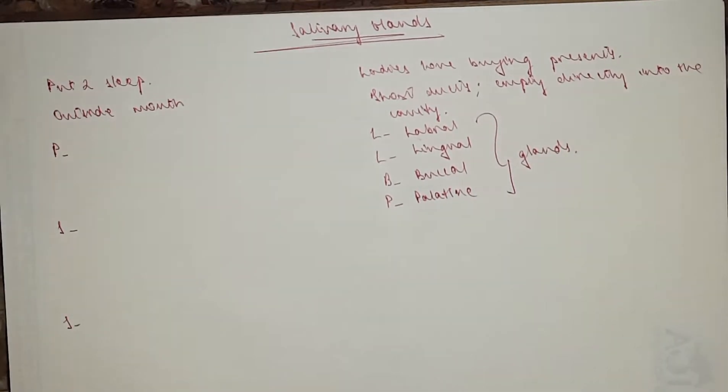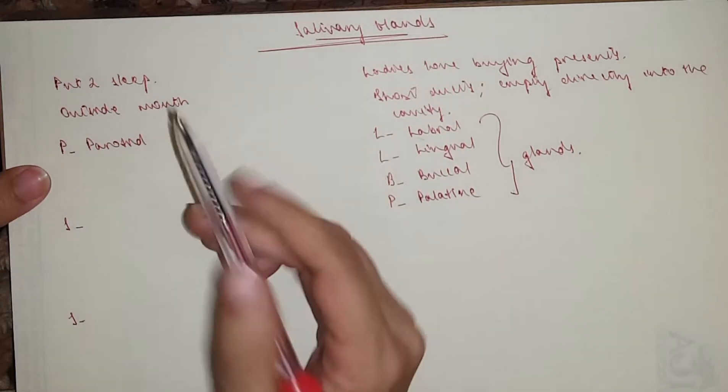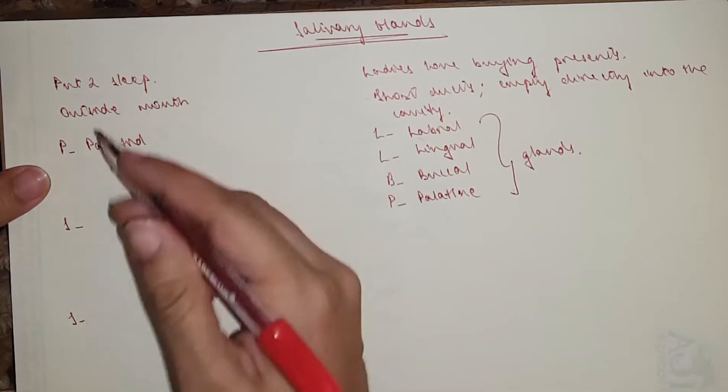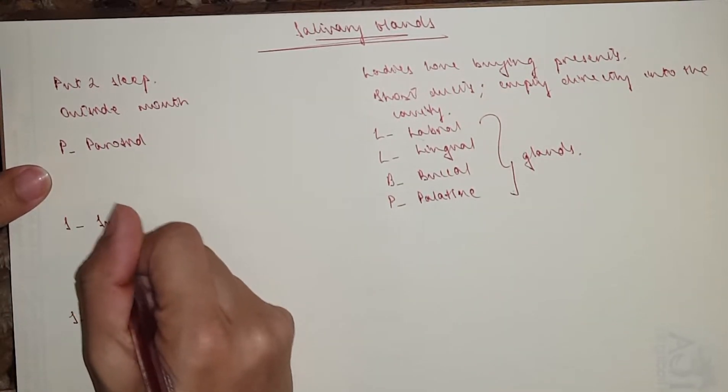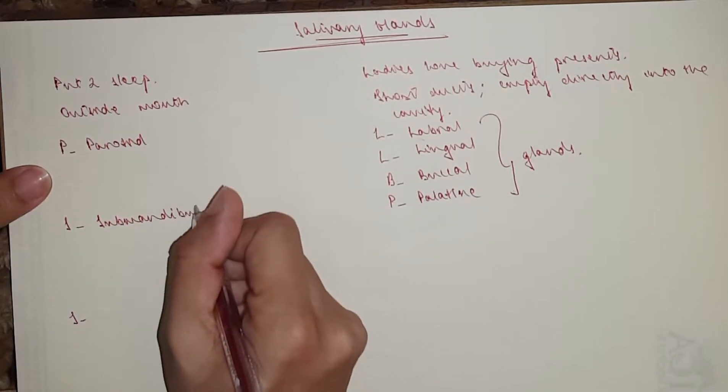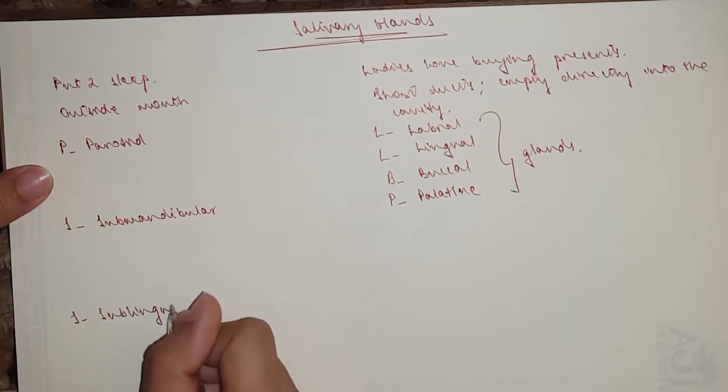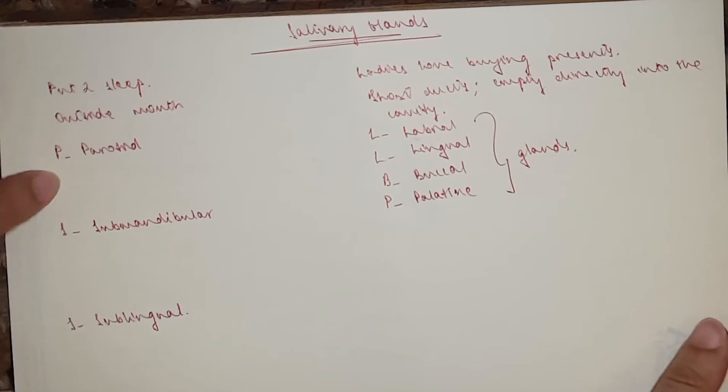And for the major, you've got three. So 'put to sleep' would be the parotid gland, which is the largest out of the three, then you've got the submandibular gland and sublingual.